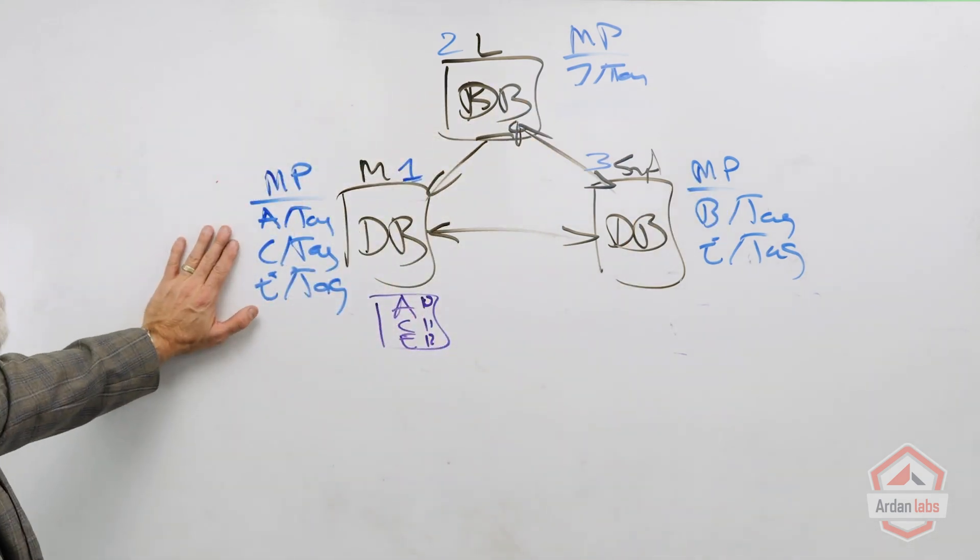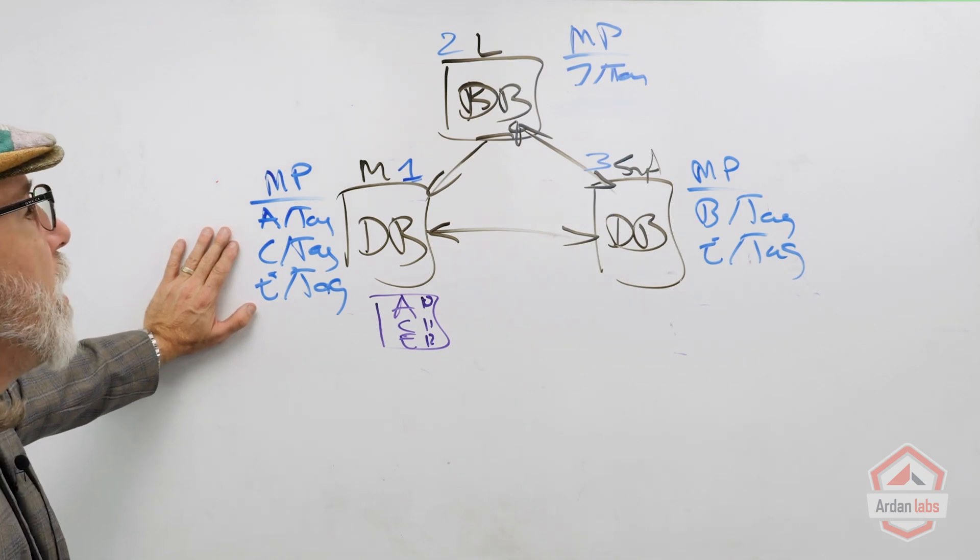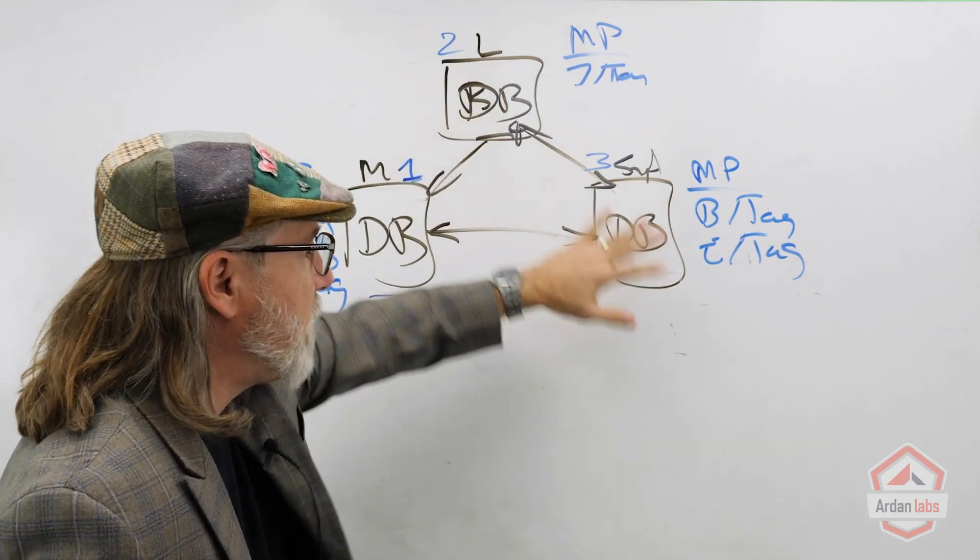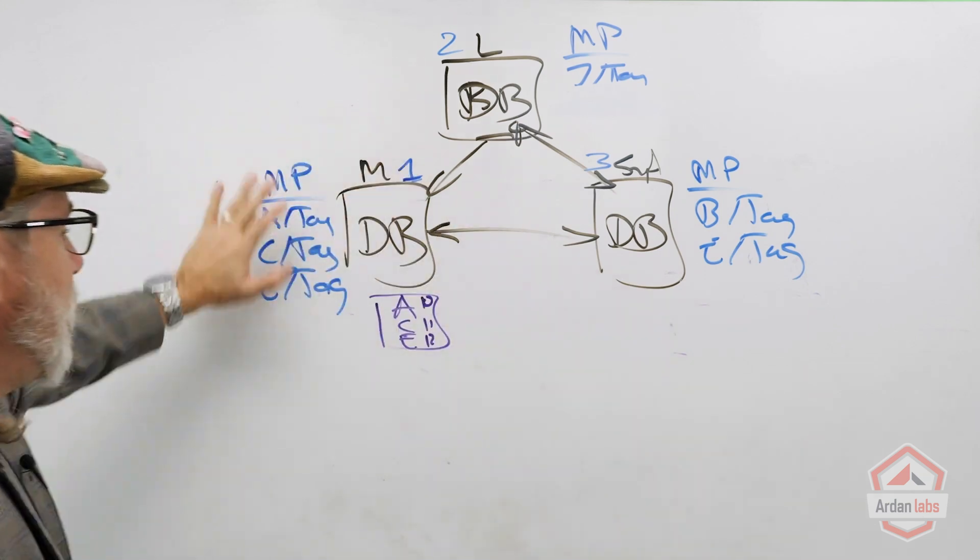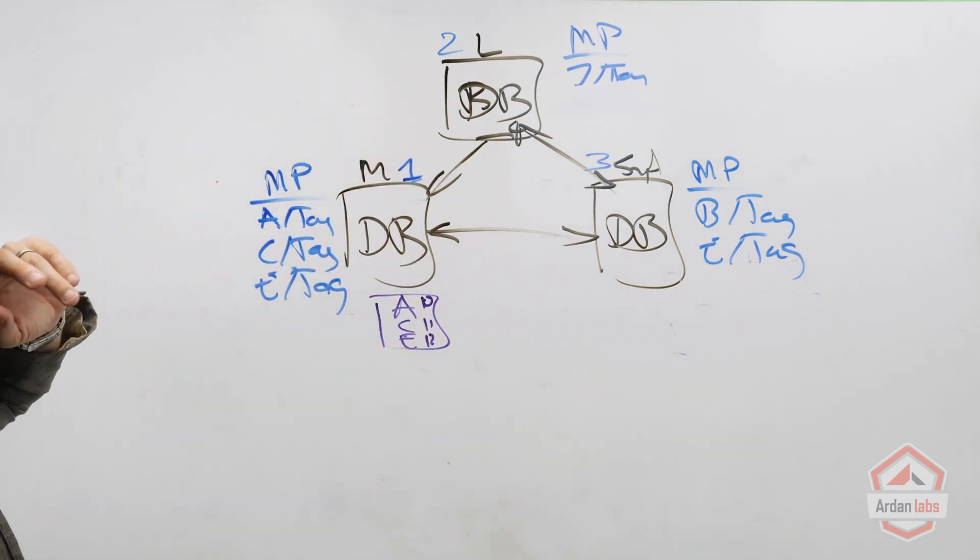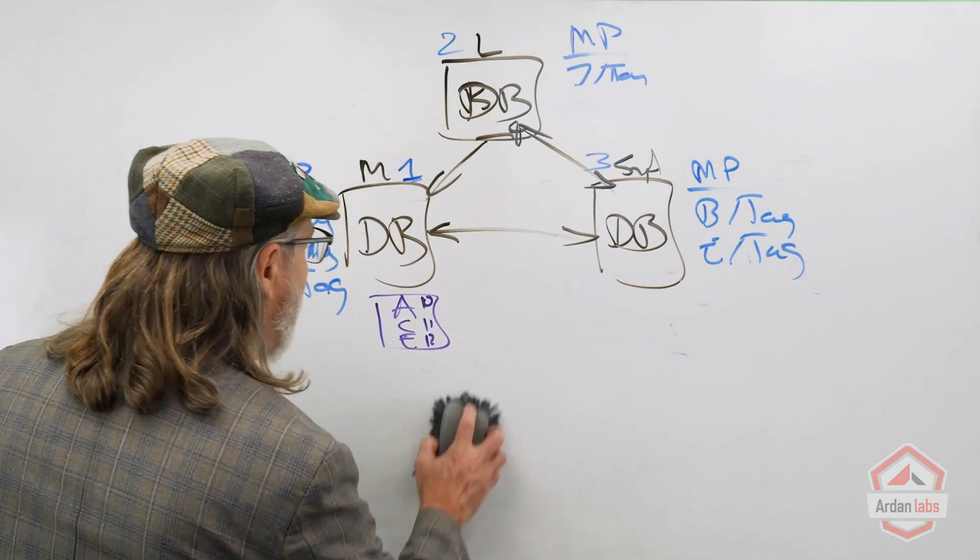This still doesn't solve the problem where several nodes keep getting selected and this one is starving. Ideally we want to add one more thing.